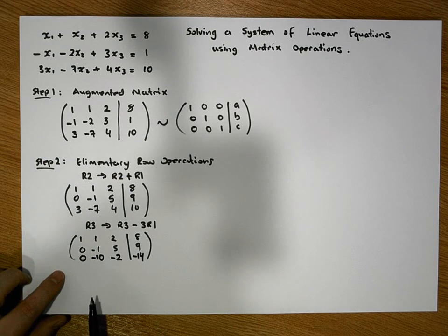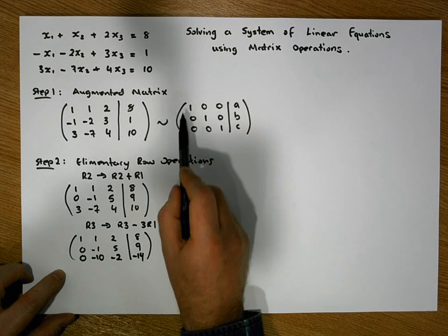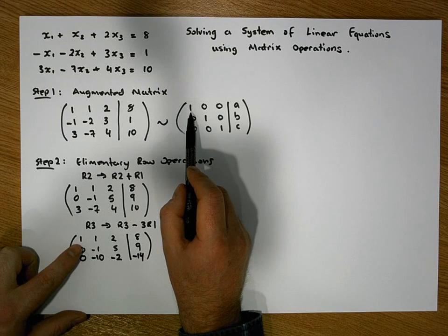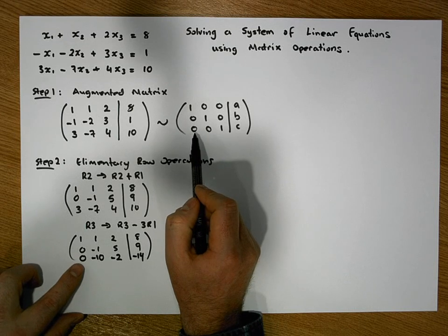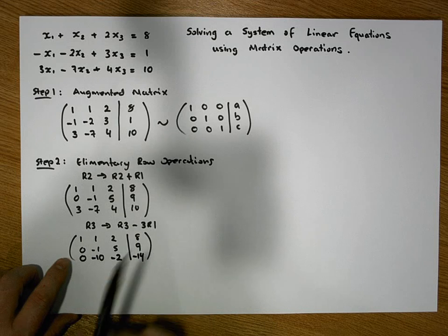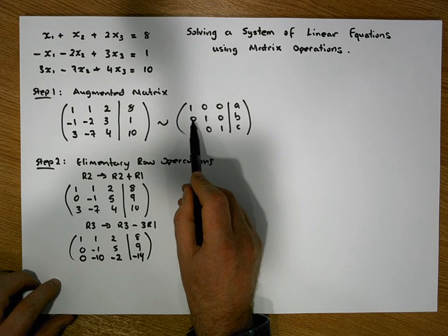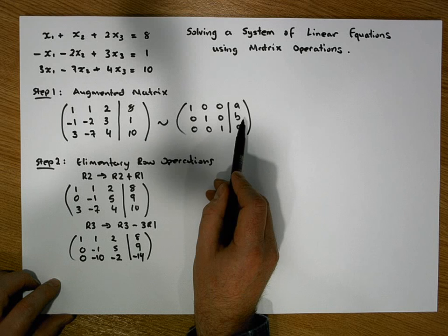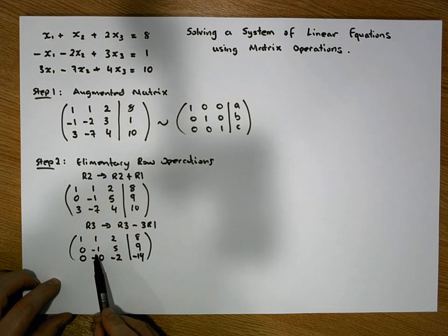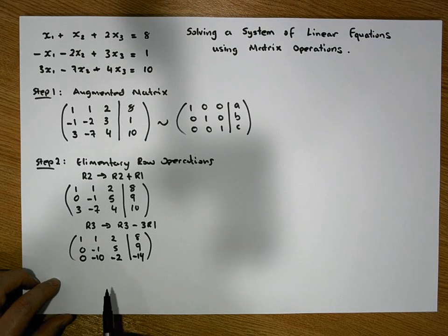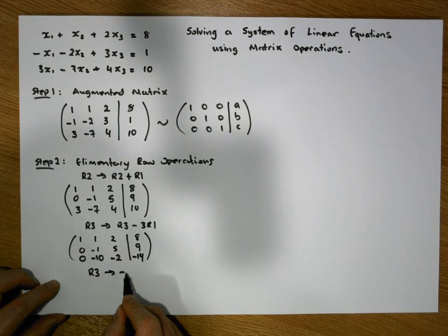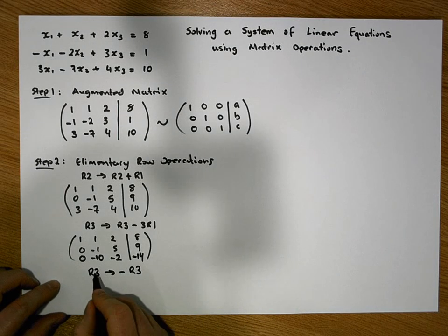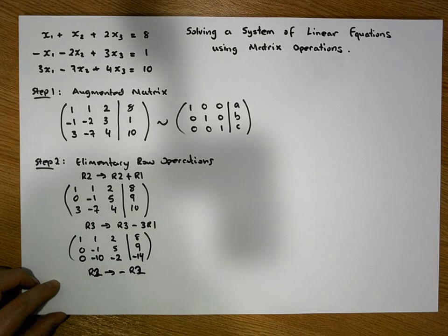We have a 1 leading row 1, a 0 leading row 2, and a 0 leading row 3. Moving to the next column, we need a 1 as the second entry in row 2. We have -1 there already, so we multiply row 2 by -1: row 2 becomes minus row 2.